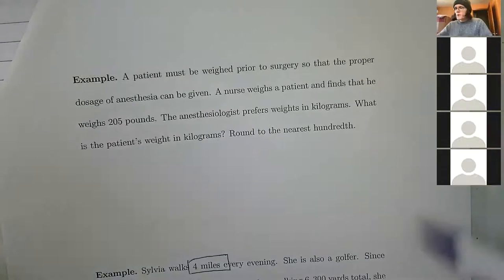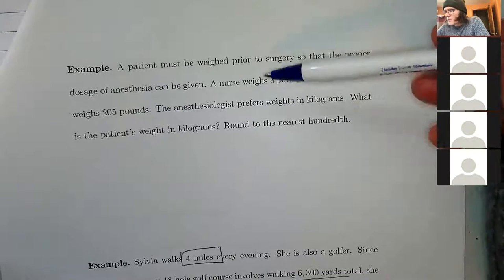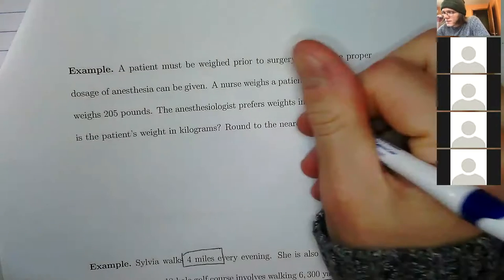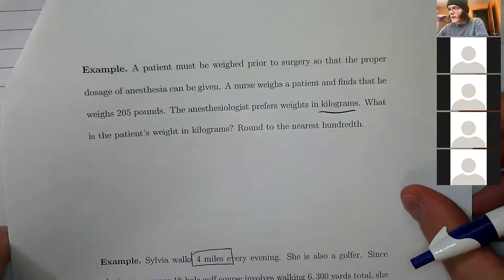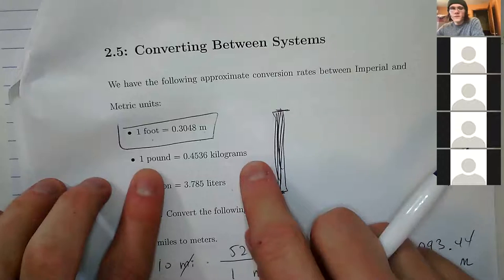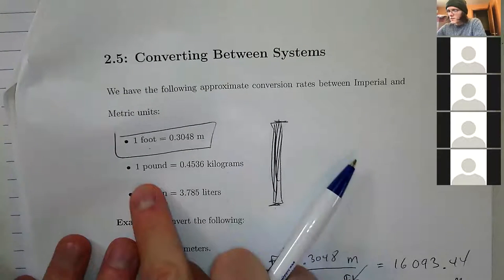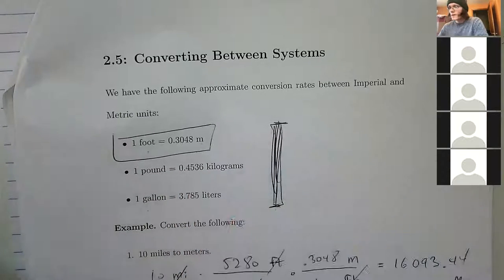So: patient must be weighed prior to surgery, because if you give him too much anesthesia he'll die. A nurse weighs a patient and finds he weighs 205 pounds, but he prefers his weight in kilograms — maybe he's Canadian. What is the patient's weight in kilograms? The conversion between imperial and metric is: one pound equals 0.4536 kilograms.